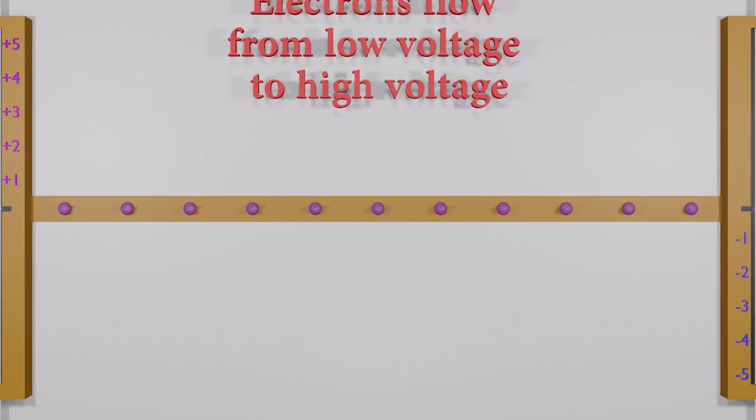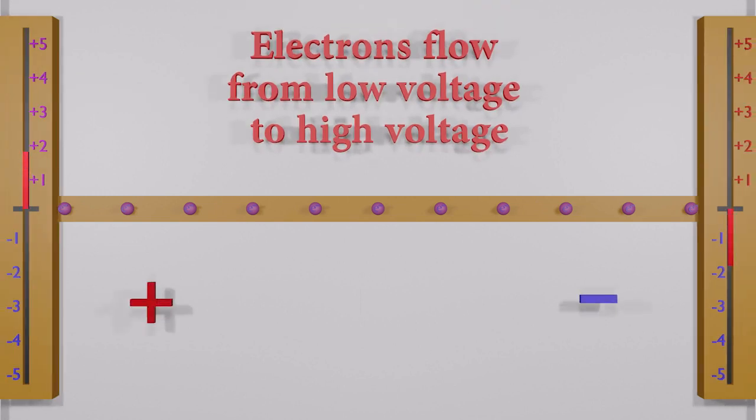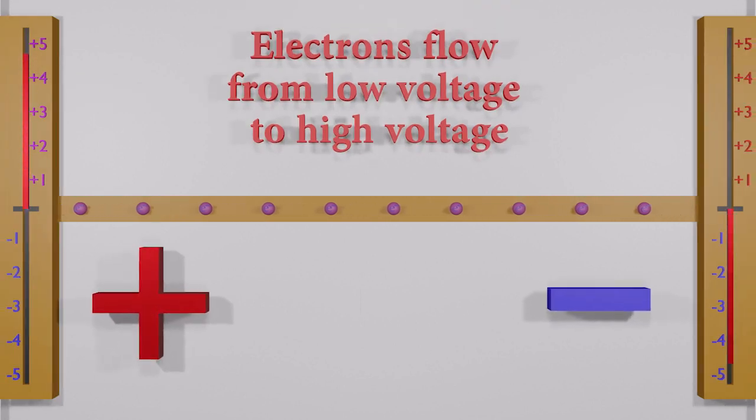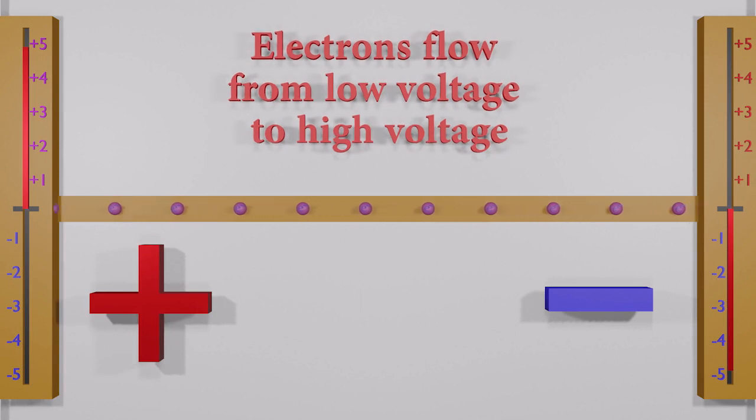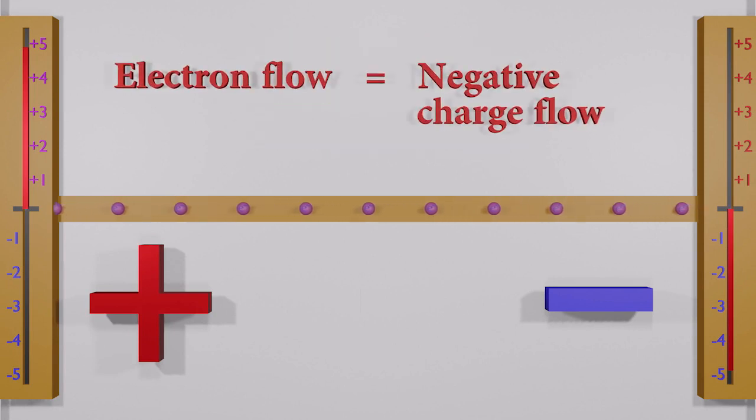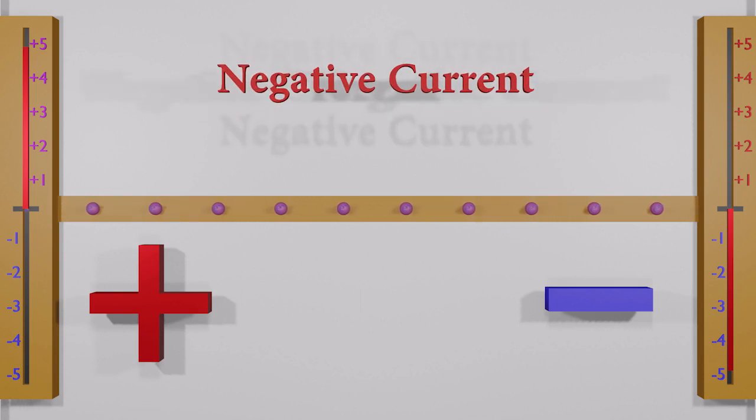Let's apply voltage difference to two ends. The electrons start to move from low voltage to high voltage. Since electrons have negative charges, this is a negative charge flow. Negative charge flow can be known as a negative current.